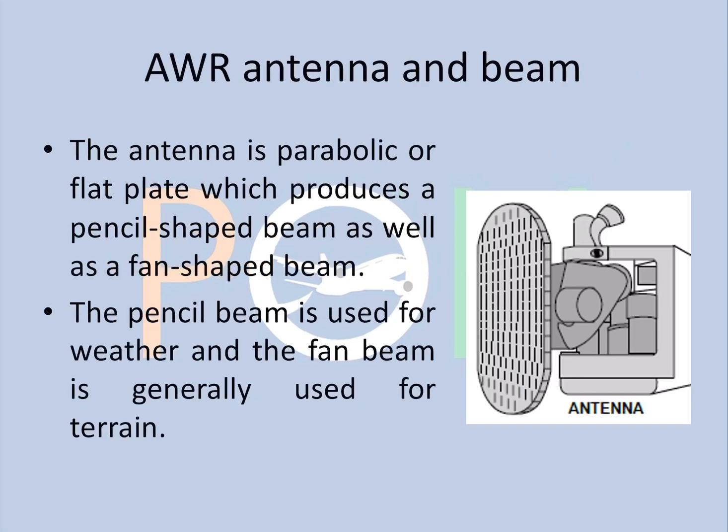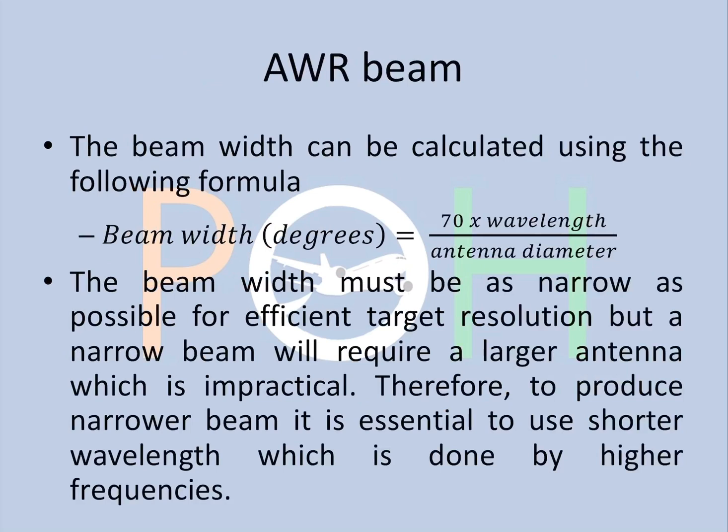This is how the flat plate antenna looks. The beam width formula: beam width in degrees is given as 70 times wavelength divided by antenna diameter. The beam width must be as narrow as possible for efficient target resolution — meaning to separate clouds. A narrow beam will require a large antenna diameter, which is not possible in the aircraft. Therefore, to produce a narrower beam, it is essential to use a shorter wavelength, which basically means higher frequency.